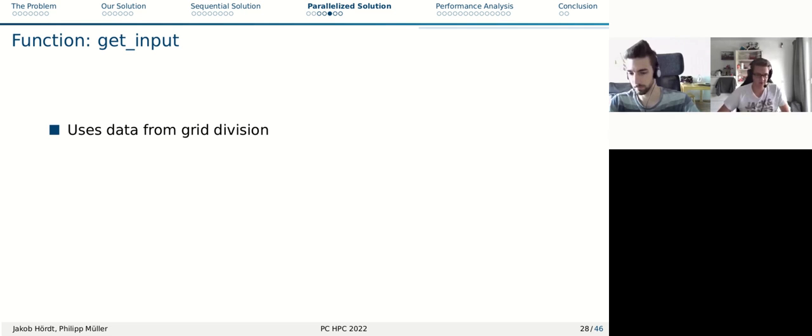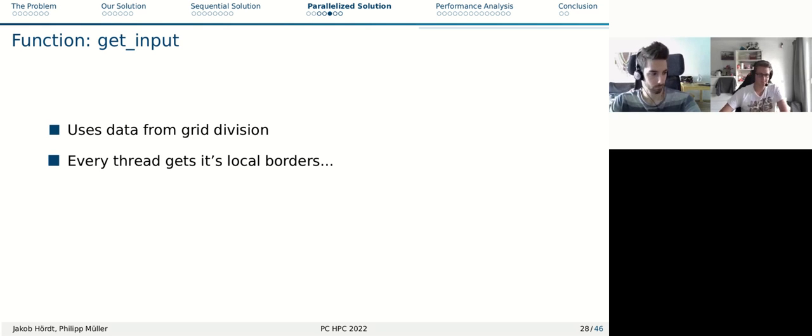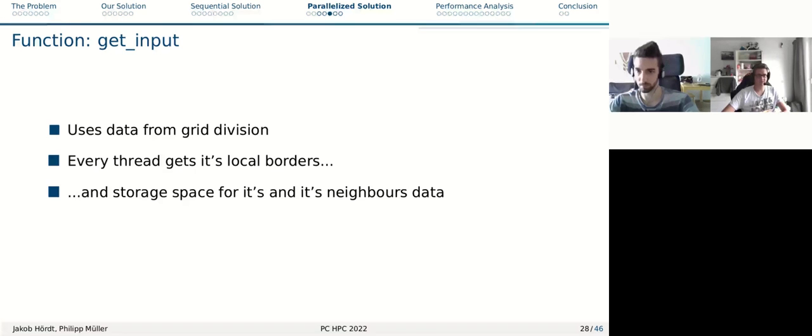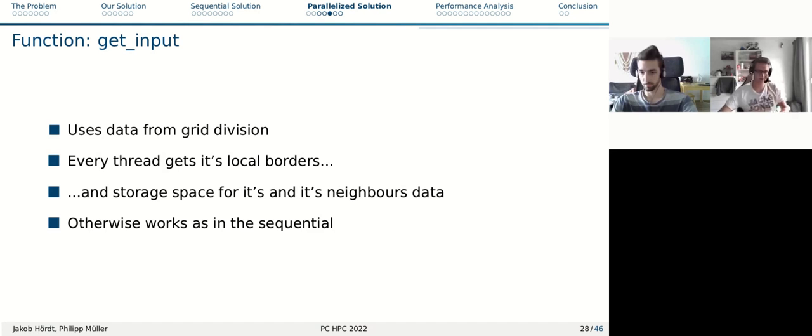Then we have a function get input. Basically, it's like the other function we had before. But with the exception that it uses the data from the grid division earlier and makes a local border for every thread. So the local borders for the thread happen here and also the threads get storage space for their data and the neighbors data. Because if you remember the borders had to be communicated. Otherwise, the function works as the sequential get input function worked.